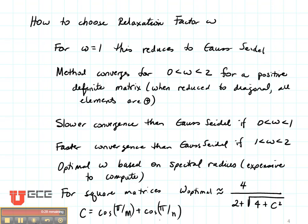If you have omega between 0 and 1, the convergence is slower than Gauss-Seidel, which you generally would not want. And if you have omega between 1 and 2, the convergence is faster than Gauss-Seidel.